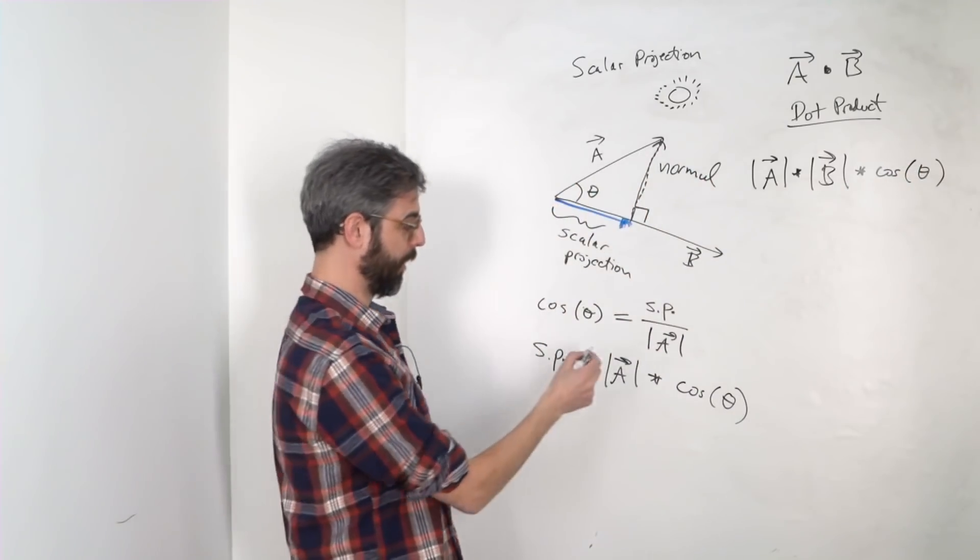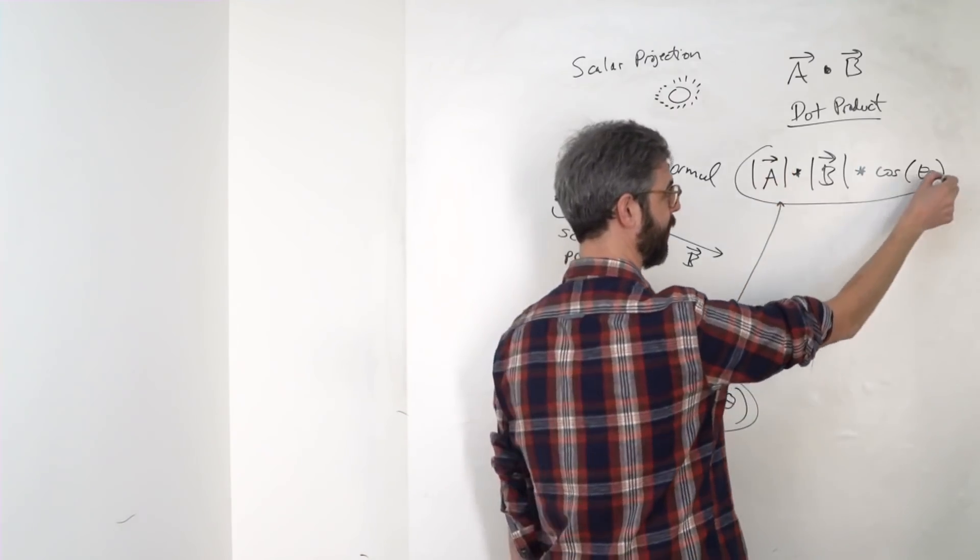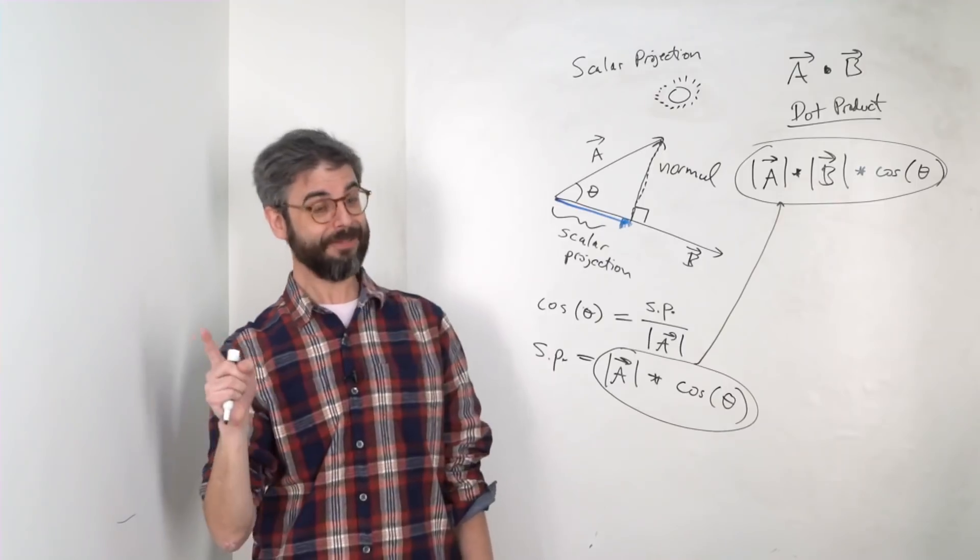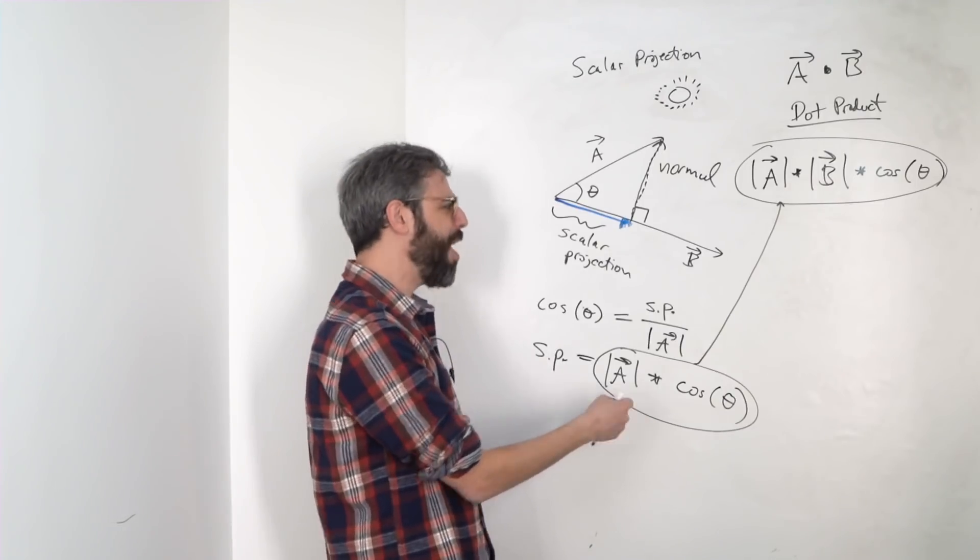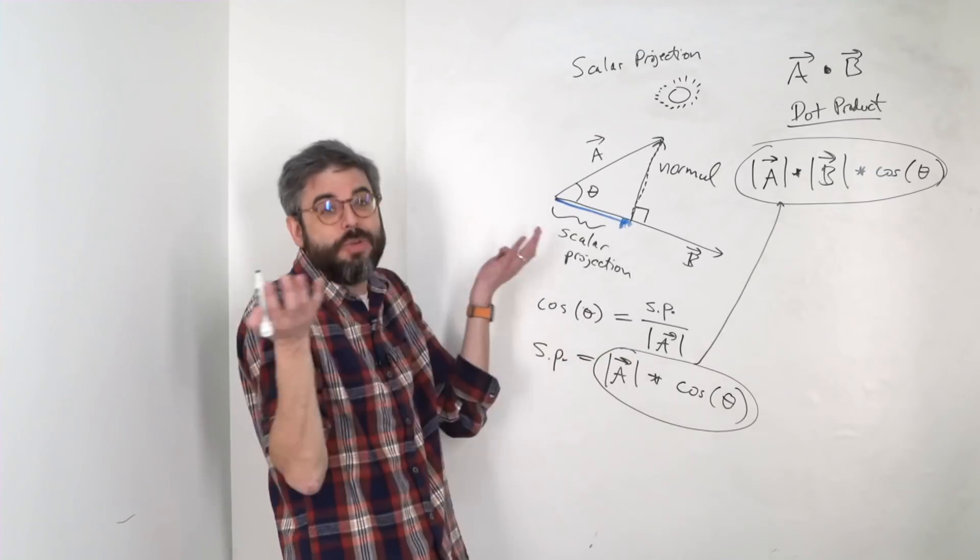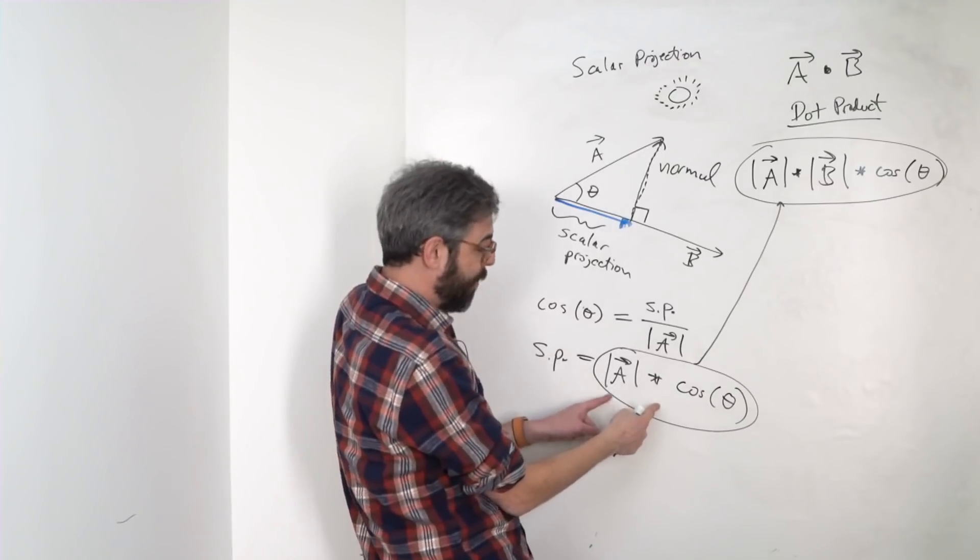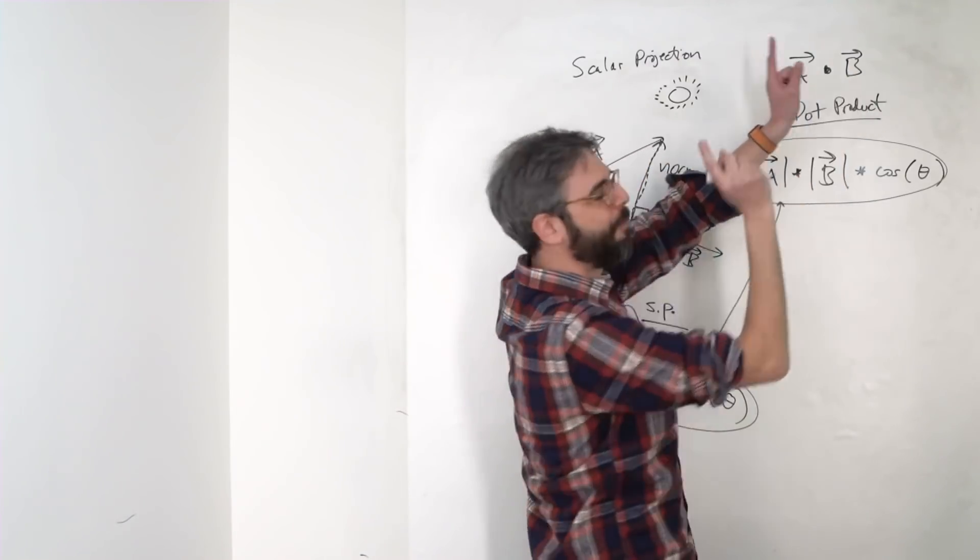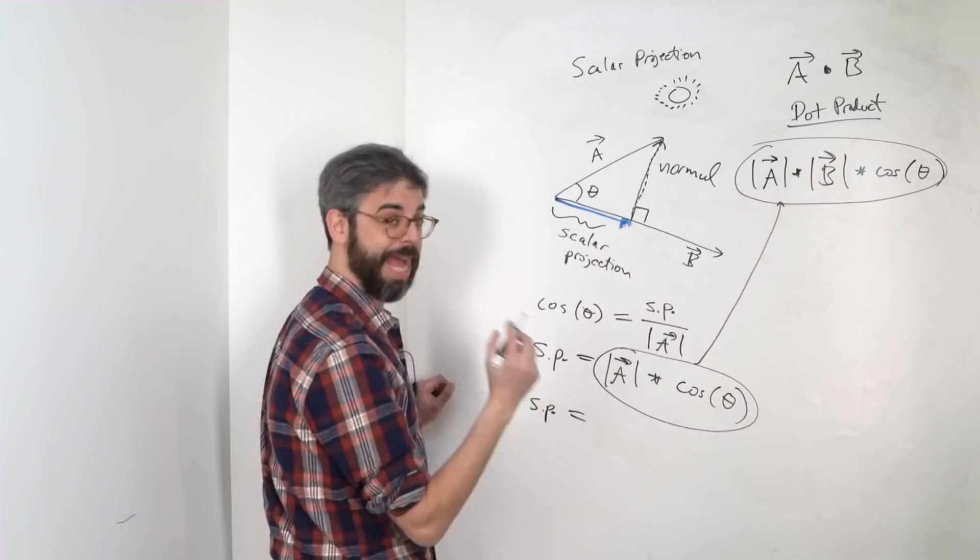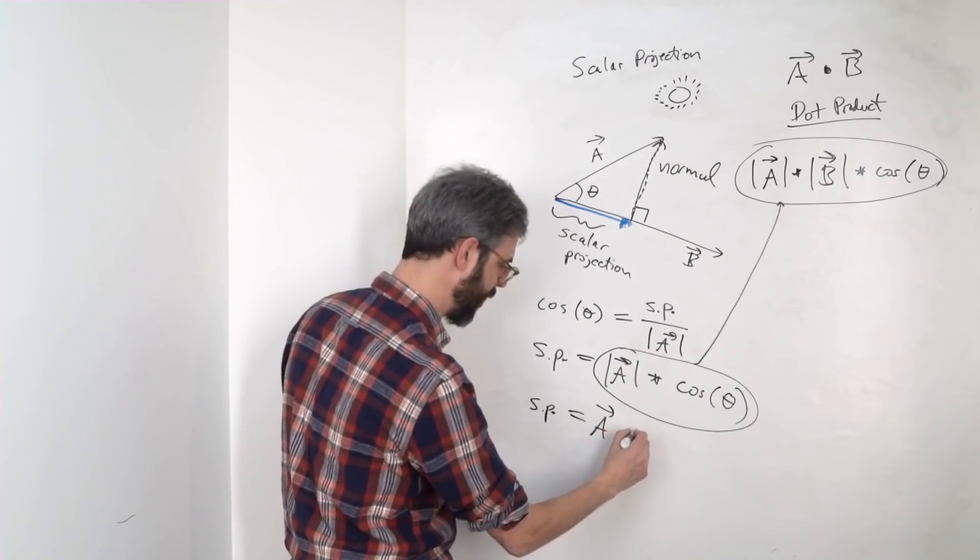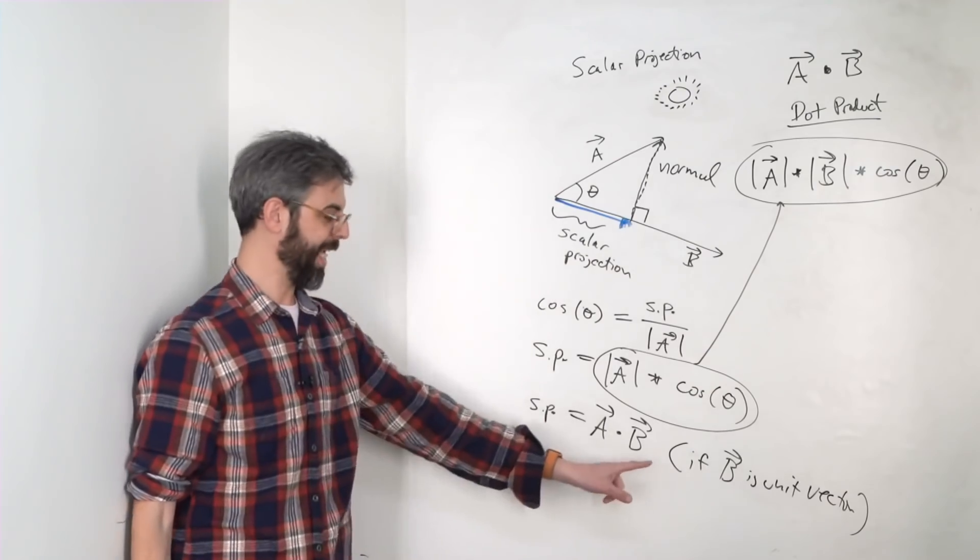The dot product of A dot B equals the magnitude of vector A times the magnitude of vector B times cosine of the angle between the vectors. This looks really similar to this right here. The only thing different is that the magnitude of B is missing. If I just made B a unit vector, then its length would be one. So the scalar projection equals A dot B if B is a unit vector.